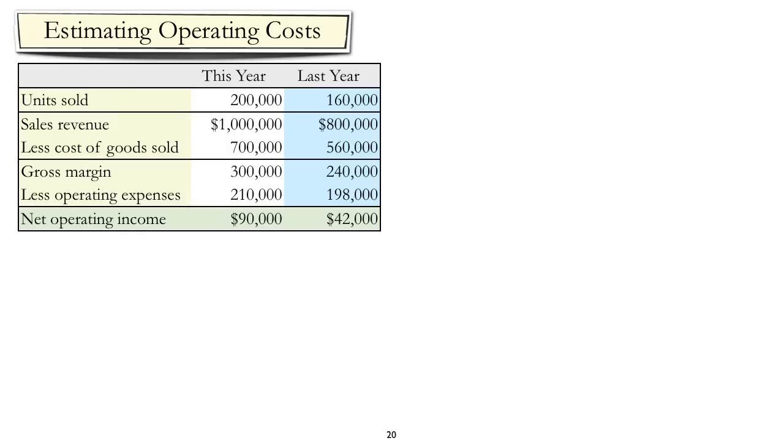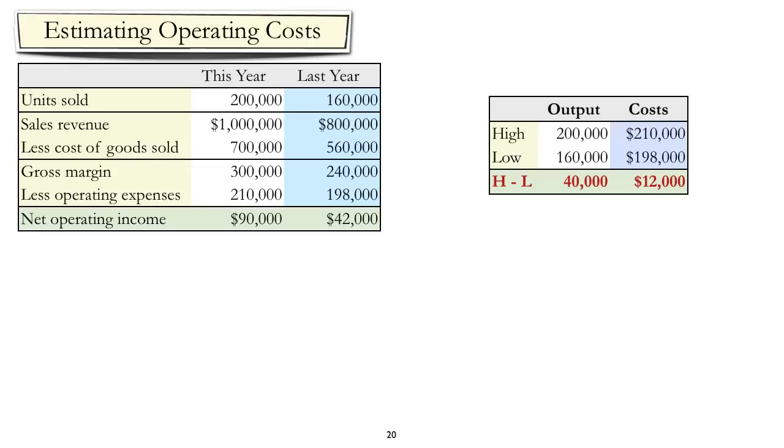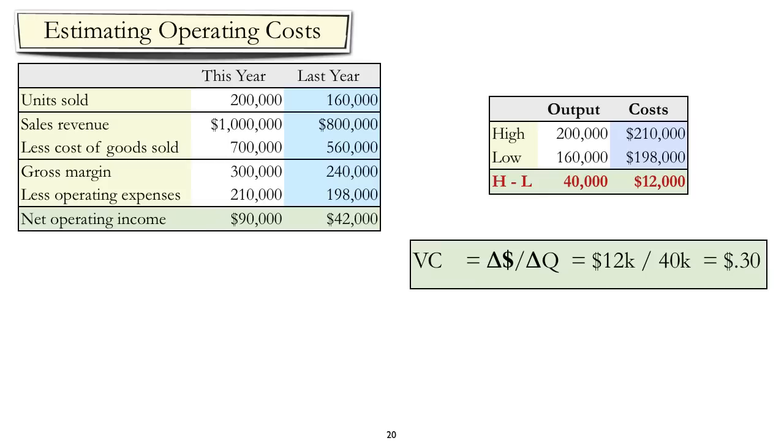Well, it's easy to pick the high and low when there are only two data points, last year and this year. So, as you can see, we have the difference in cost of $12,000 and the difference in output of 40,000 units. And using the formula for variable costs, we take the $12,000, divide by the 40,000 units, and get a variable cost of $0.30 per unit.